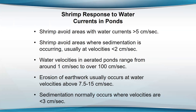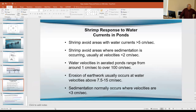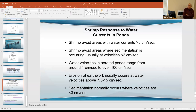Each species probably has its optimum velocity for growth, and velocity is also going to influence the quality of meat to some extent. A lot more needs to be done on that. All I'm pointing out is that most of what we know about aeration right now is based on oxygen. Water circulation is beneficial for the aeration itself because it has to move water away from the aerator to keep the water around it from becoming saturated, which would reduce aeration efficiency.